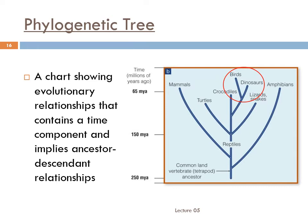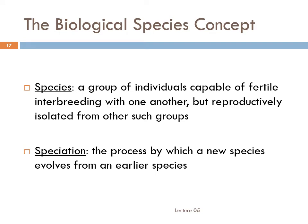So if we want to start studying macroevolution, we need to gather together all the species that we know about and then use cladistic analysis to determine how closely related they are. Then we can make some interpretations about ancestor-descendant relationships and tell which species developed into which others. As I said at the beginning of this lecture, this assumes we have a strong grasp of the species concept. The most popular definition of species today is called the biological species concept: a species is a group of individuals capable of fertile interbreeding with one another, but reproductively isolated from other such groups.